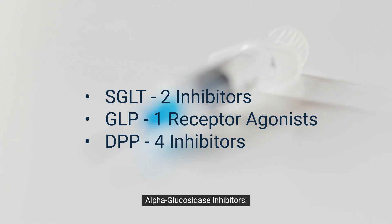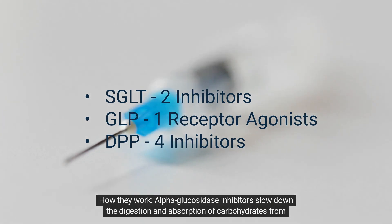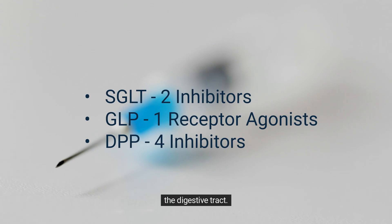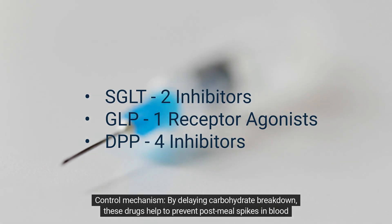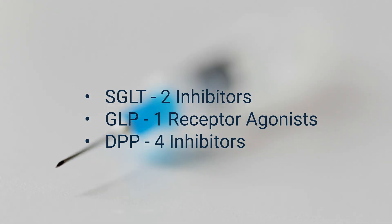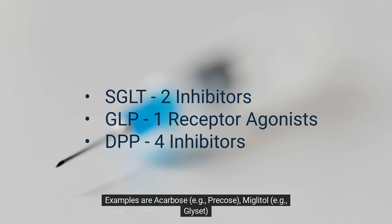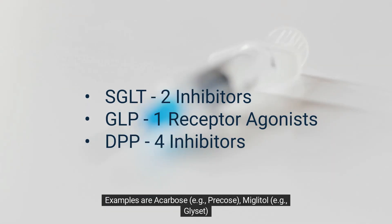Alpha-glucosidase inhibitors slow down the digestion and absorption of carbohydrates from the digestive tract. By delaying carbohydrate breakdown, these drugs help to prevent post-meal spikes in blood glucose. Examples are acarbose (Precose) and miglitol (Glyset).